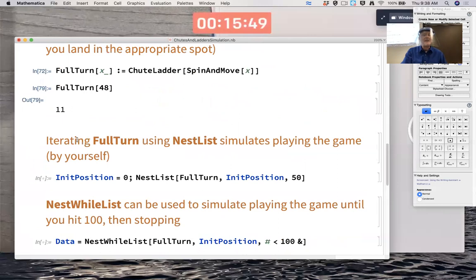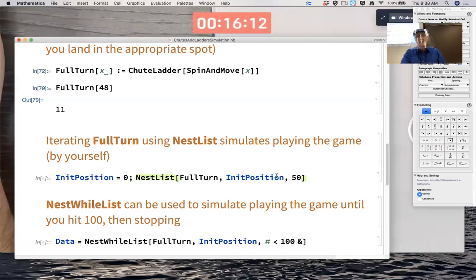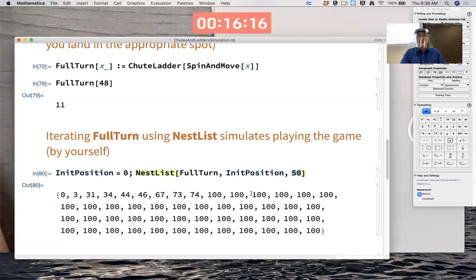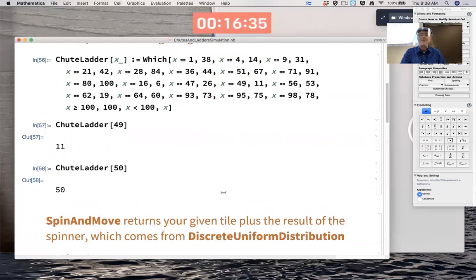Now I can iterate FullTurn with something called NestList to simulate playing the game by yourself. InitPosition means you're just starting off the board at position zero. NestList is going to iterate this FullTurn function based on an initial position that I'm picking to be zero. So it's the start of the game, but I could pick something non-zero to simulate starting at some other spot. There we go. I did 50 iterations. And wow, that was a quick game actually. The game was won in one, two, three, four, five, six, seven, eight, nine spins. Wait a minute. There must be some error here because there's no ladder that goes up to 100. There's some error here. I've got to fix something somewhere here.